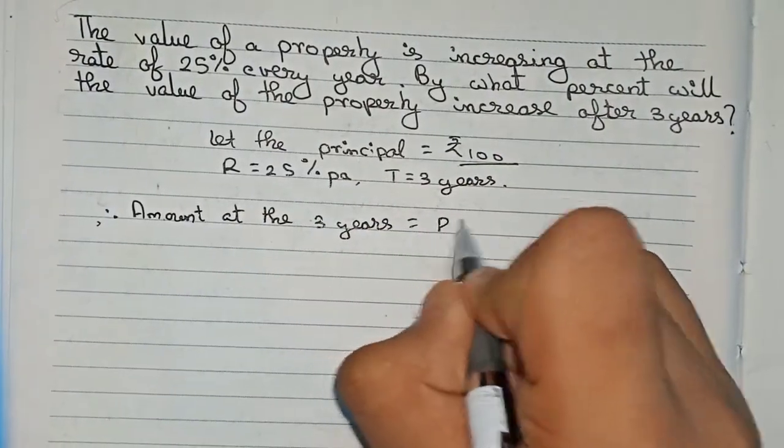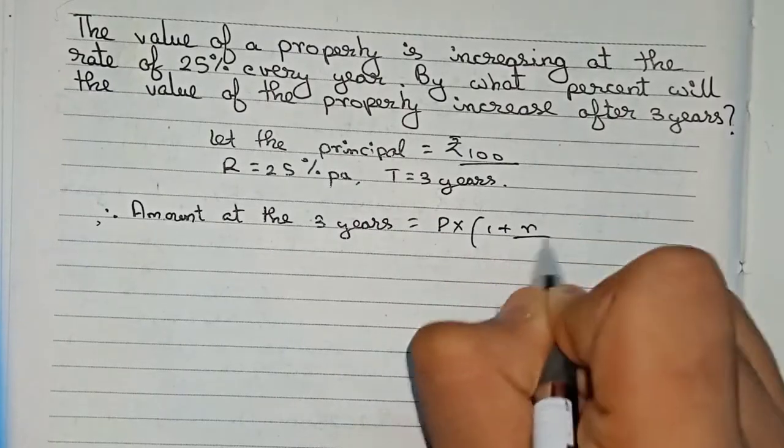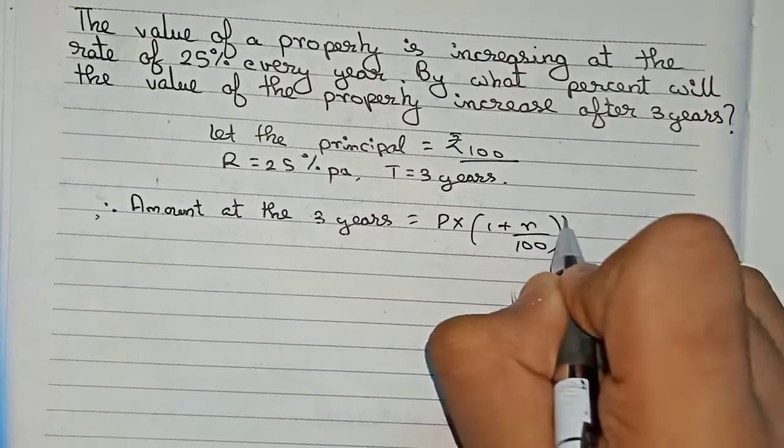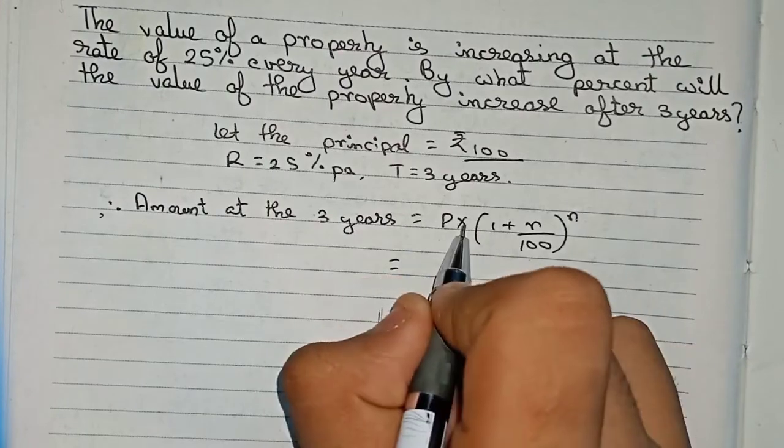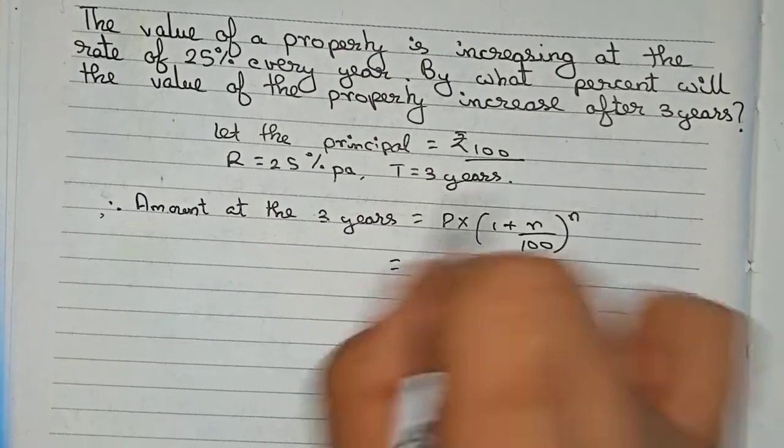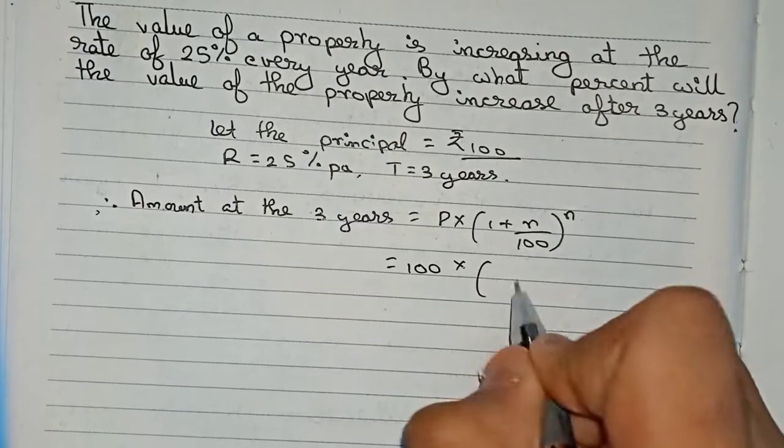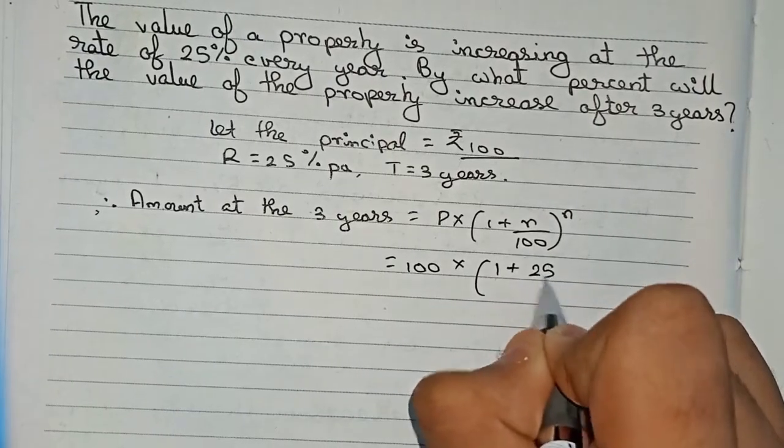The formula is: principal × (1 + rate/100)^n. Now I put down the values: principal is 100 × (1 + 25/100)^3.